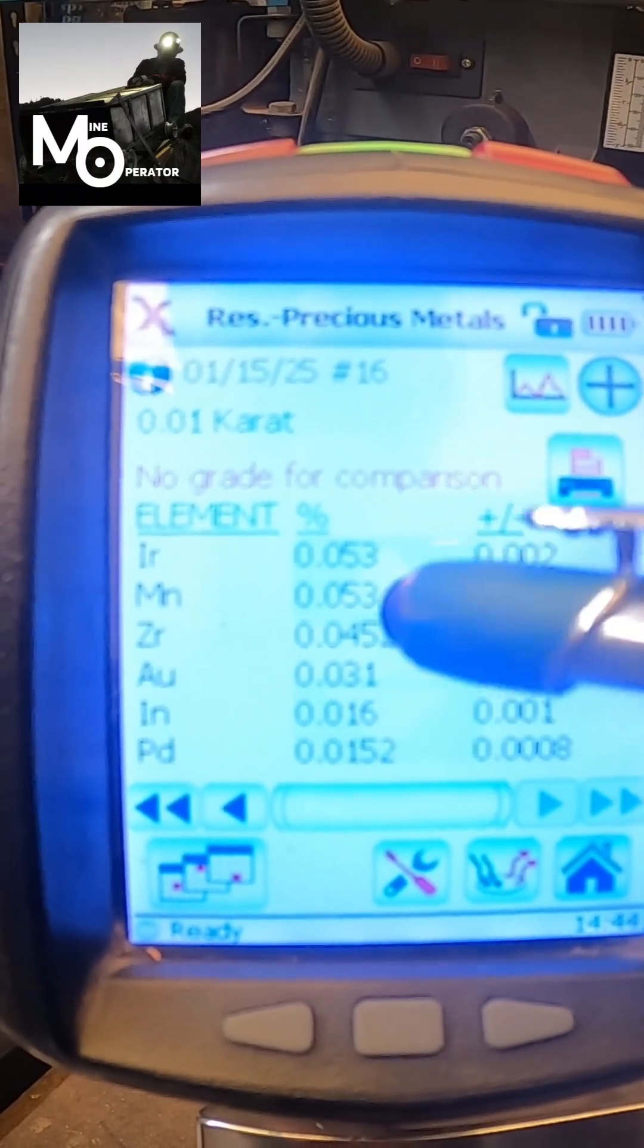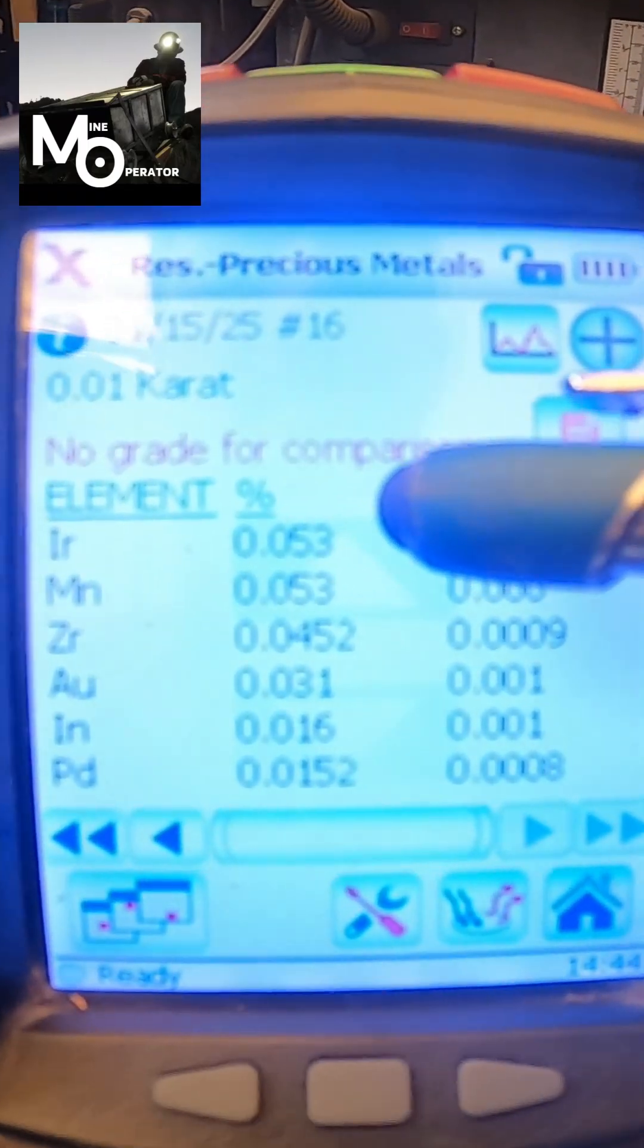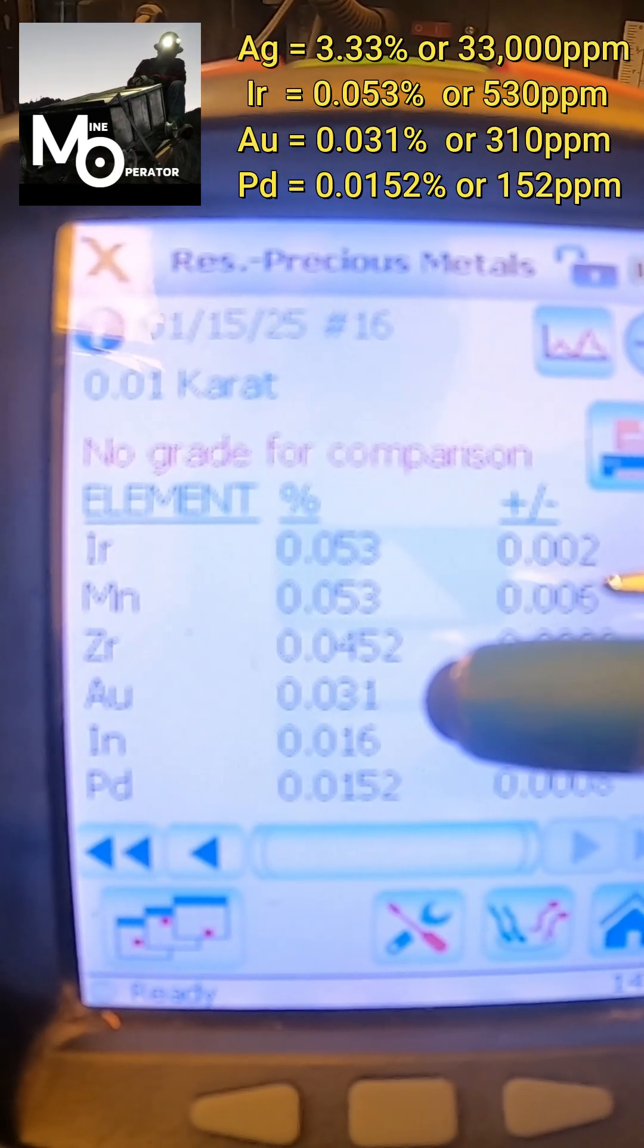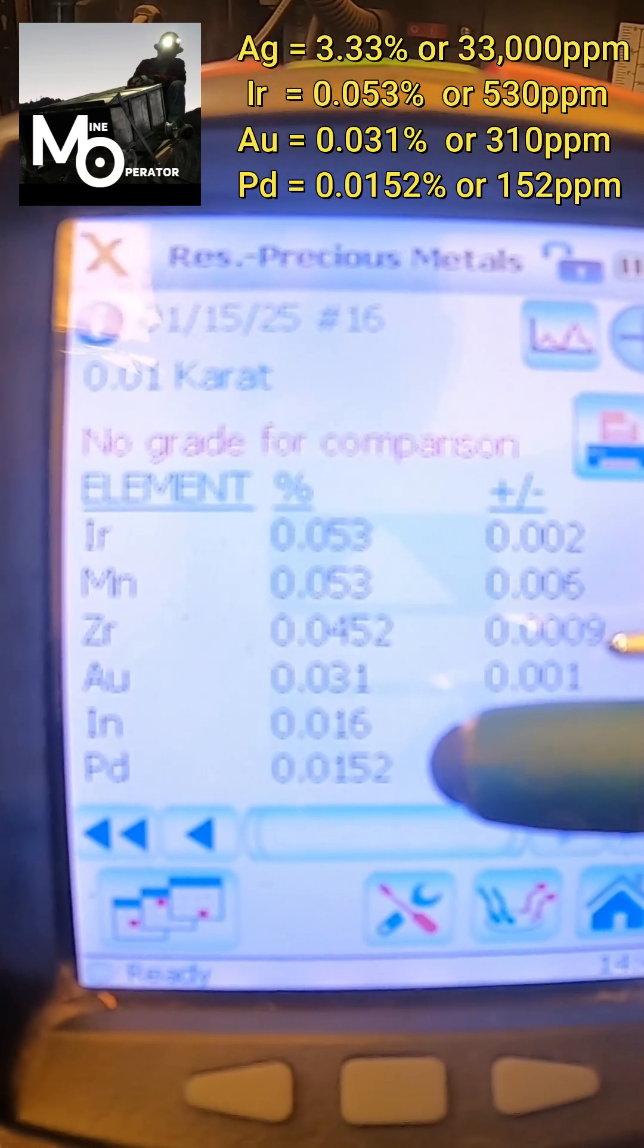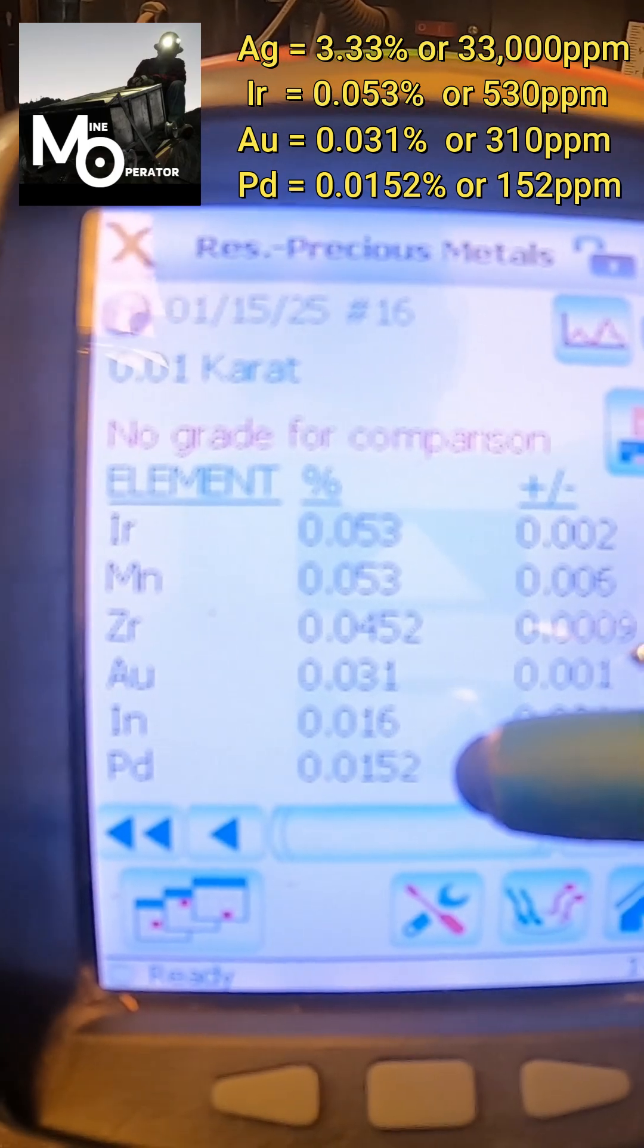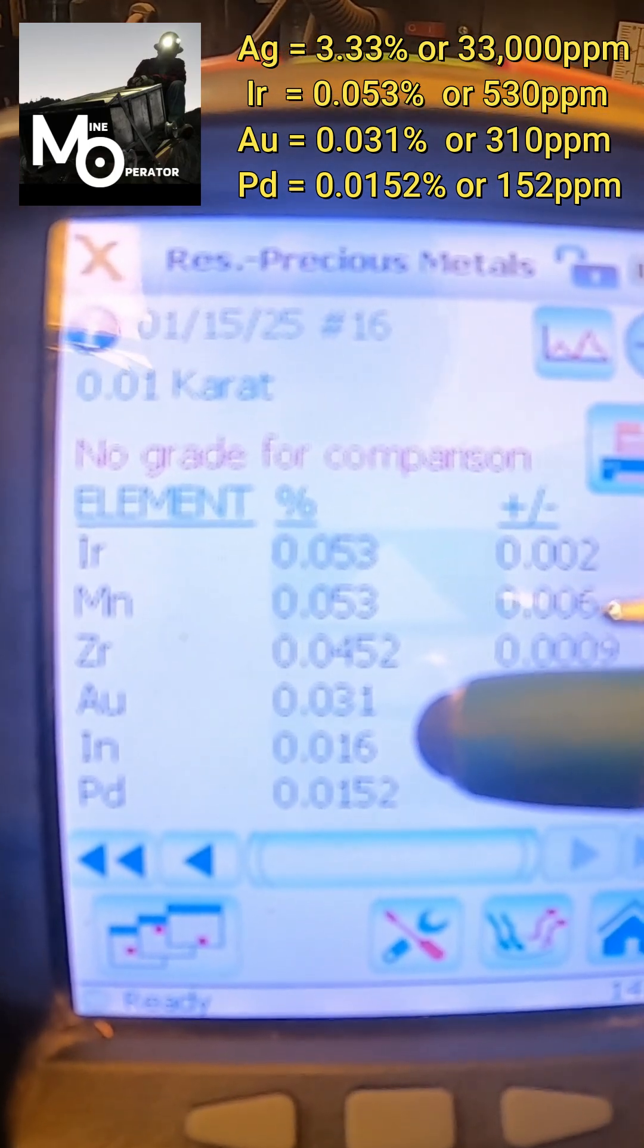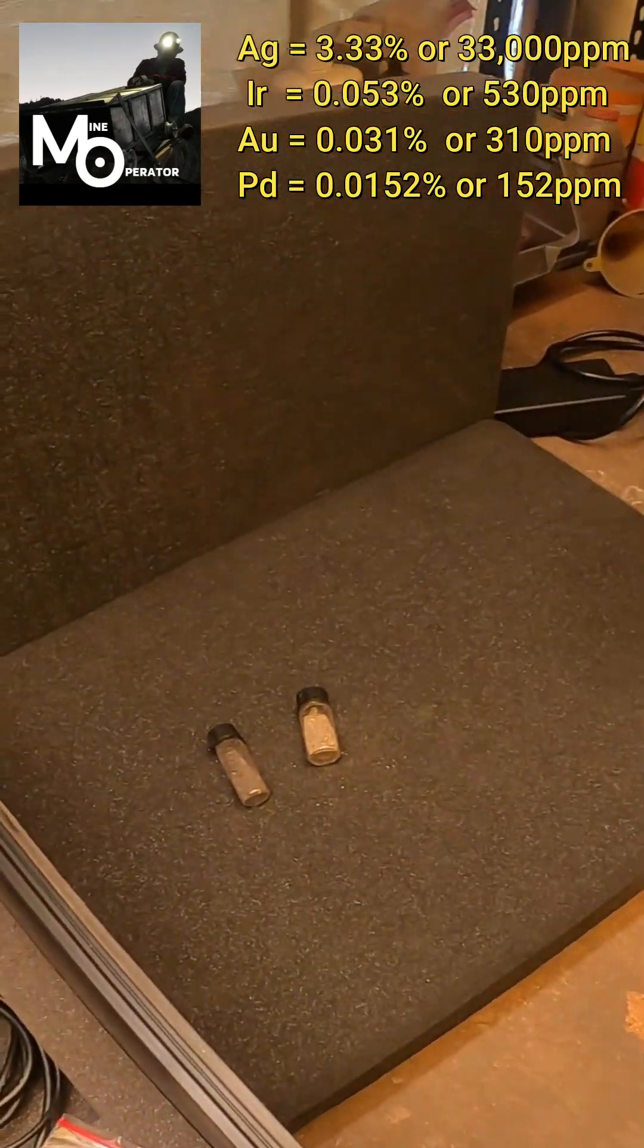Precious metals mode is calibrated to identify gold, silver, and all six of the platinum group elements. The XRF did identify silver, iridium, gold, and palladium in the sample. I have rarely seen these elements show up on the XRF, so Sean has some good ore to work with.